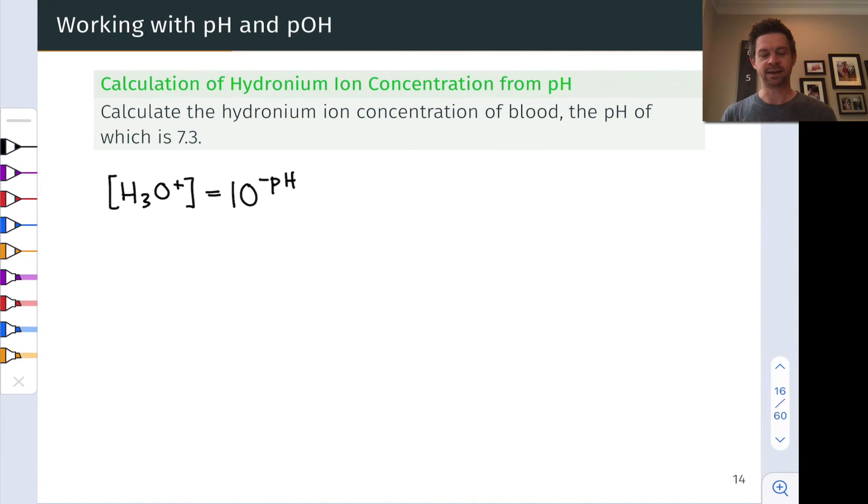In this problem, we're asked to calculate the hydronium ion concentration that corresponds to a pH of 7.3, the pH of blood. So all we're doing here is just applying the definition of pH. The hydronium ion concentration is equal to 10 to the power of the negative pH. So we can simply plug in here, 10 to the negative 7.3, punch that into our calculator, and the result is 5 times 10 to the negative 8 moles per liter. Pretty straightforward math here, just applying the definition of pH to calculate this hydronium ion concentration.